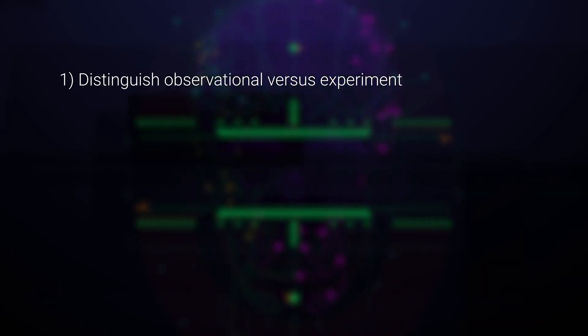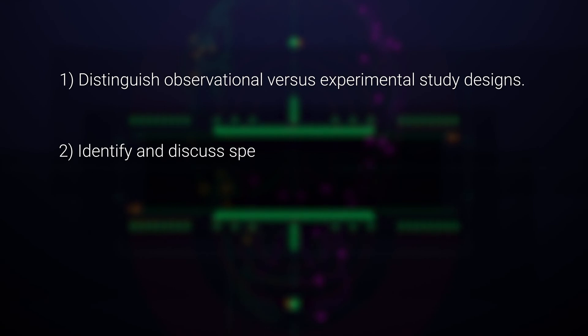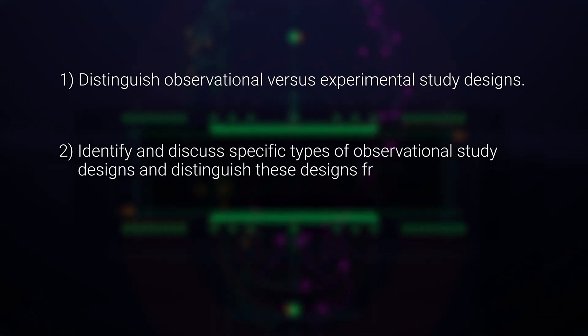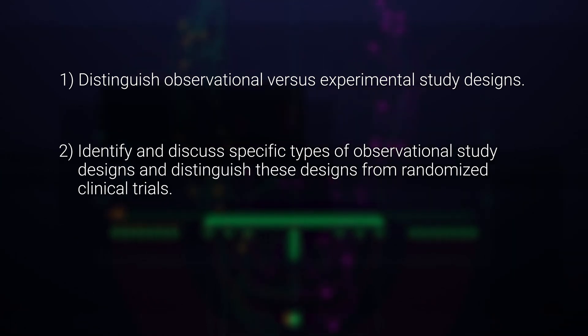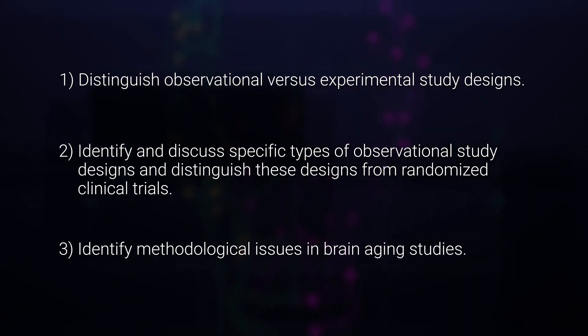After viewing this video, you should be able to distinguish observational versus experimental study designs, identify and discuss specific types of observational study designs and distinguish these from randomized clinical trials, and identify methodological issues in brain aging studies.